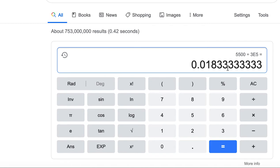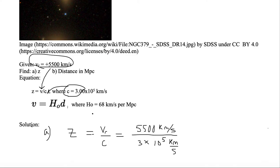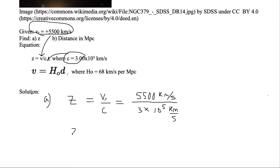This 3 is less than 5, so we're going to drop it. So the answer is 0.0183. So z is equal to 0.0183.